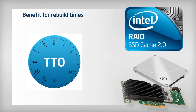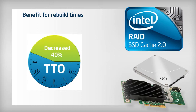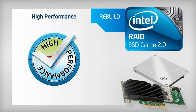Intel SSD Cache 2.0 can also decrease the time to optimal, or TTO, by relieving the disk of host operations, which allows it to rebuild at a faster rate. Furthermore, SSD Cache 2.0 can help maintain high performance when the underlying hardware is non-optimal.